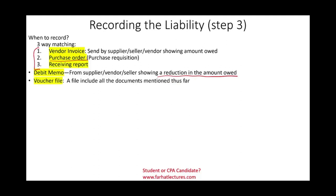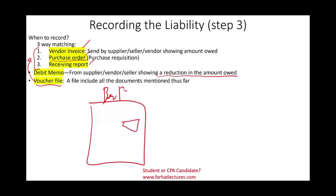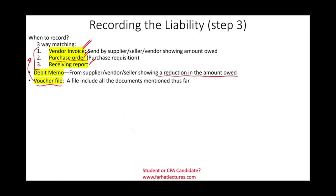A voucher file includes all the documents mentioned thus far: vendor invoice, purchase order, and receiving report — literally a file with the paperwork in it. When doing an audit, I would go to the bank statement, select a disbursement amount like $3,460 for supplies, and go see if we have a vendor invoice, a purchase order, and a receiving report. If we have those three, this disbursement is legitimate. I audited a German company in the Lehigh Valley — they were very meticulous in their vendor invoices, it was impressive how everything was organized.